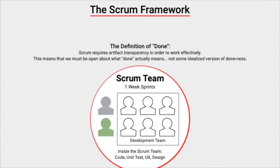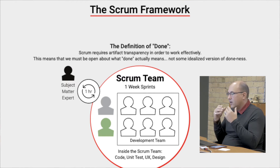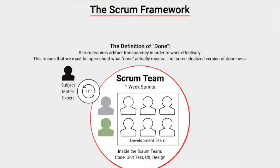But they also have some things that happen outside the team. For example, there might be a subject matter expert — someone from the business who really understands the marketplace and the customers. When the Scrum team makes a request for information to that subject matter expert, that person gets back within an hour. This is great, and because of the speed of response, it doesn't have a huge impact on the team's work during a one-week sprint.